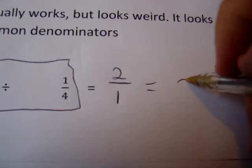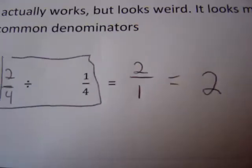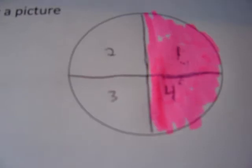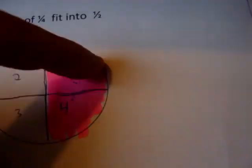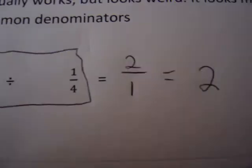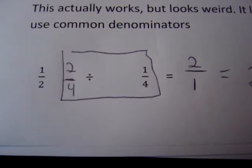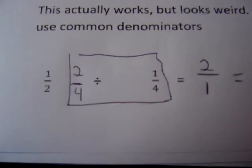2 divided by 1 is 2, and 4 divided by 4 is 1, and 2 over 1 is the same as just 2. There you have it, it's the same answer we got using the picture above. Two pieces, our answer is 2. So you can divide fractions straight across if you use common denominators.